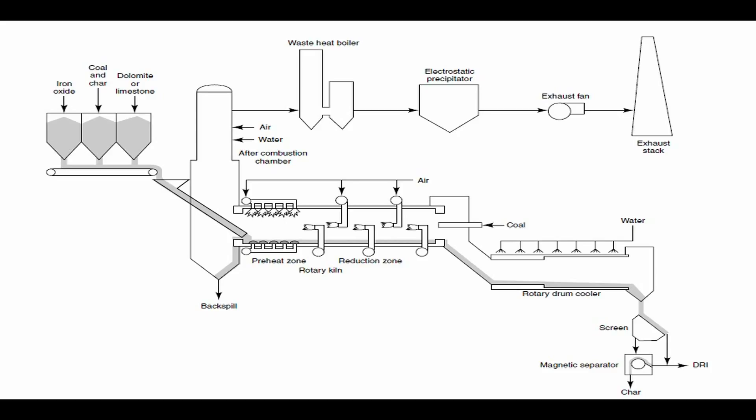A low ash fusion temperature will promote formation of accretions in the kiln. The coal ash composition is also important because a siliceous ash might react with ferrous oxide to form the low melting compound ferrous silicate and interfere with the reduction to metallic iron.